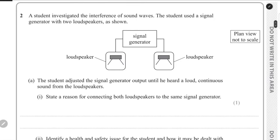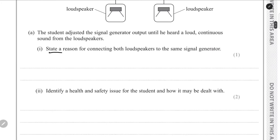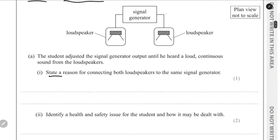Moving on to question 2. We have an investigation about the interference of sound waves, using a single signal generator with two loudspeakers. We have to state the reason for using one signal generator. This is because if connected to different signal generators, the sound from the loudspeakers might not be coherent. From the same signal generator, they must be in phase and will be coherent.